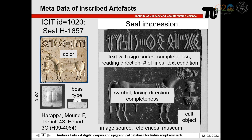For iconographic analysis, each symbol such as animals is stored along with its facing direction and completeness, as well as its associated cult object. In total, the database consists of 29 tables with more than 1.2 million data entries.